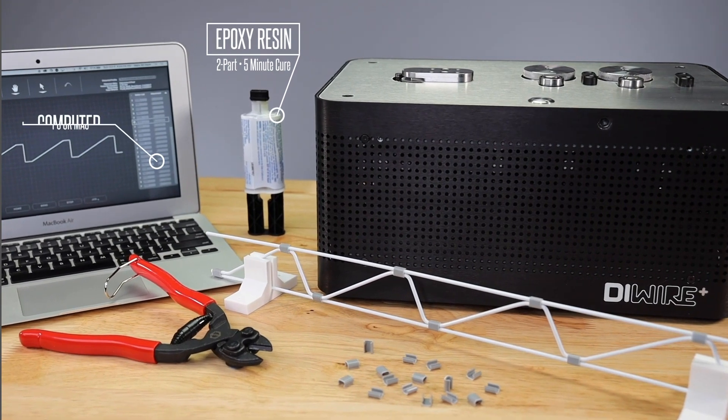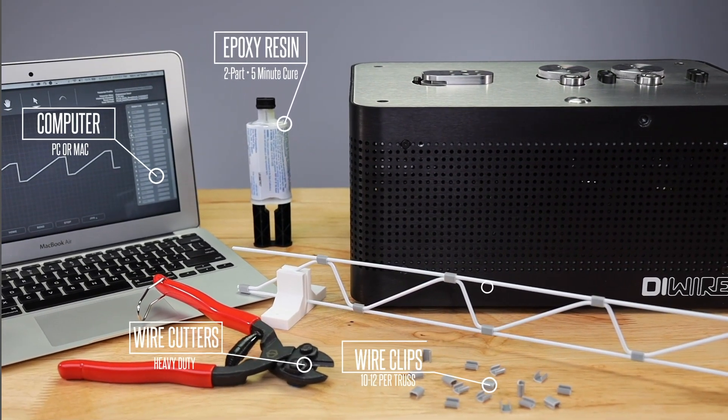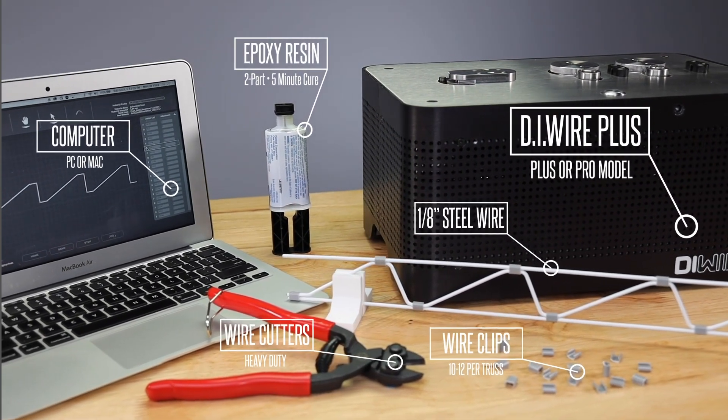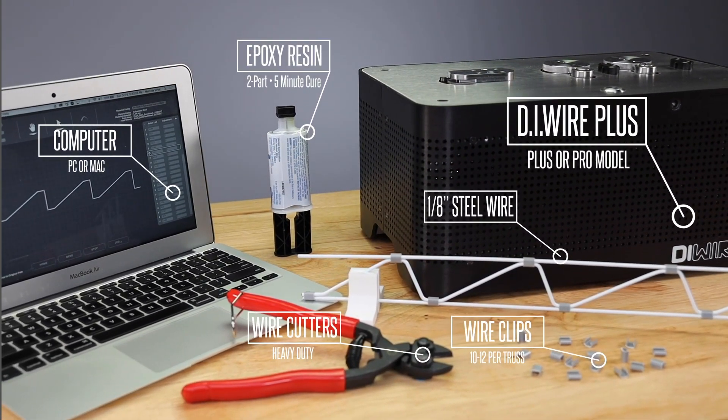For this project, you'll need some five-minute epoxy, a computer running wire wear, some heavy-duty wire cutters, some wire clips, about six feet of steel wire, and of course, your DIYer Plus CNC wire bending machine.